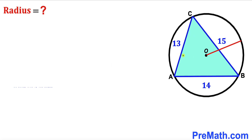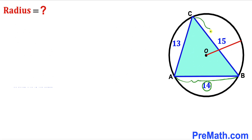Welcome to pre-math. In this video we have a blue shaded scalene triangle ABC fully inscribed in a circle with center O, such that side length AC is 13 units, side length AB is 14 units, and side length BC is 15 units. Our task is to calculate the radius of this circle.